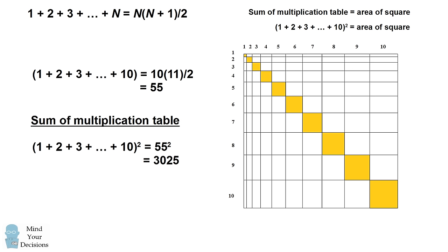which once again gets us to 3025. But that's the reason we end up squaring the numbers from the sum of the numbers from 1 to 10, is because essentially we are finding the area of a square which has a side length of 55, which is going from the sum of the numbers from 1 to 10.